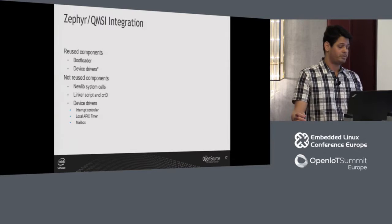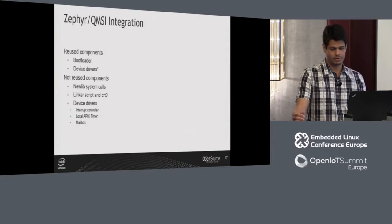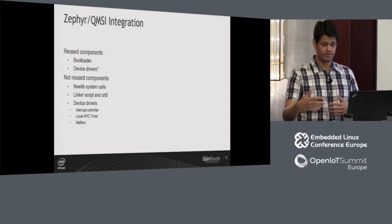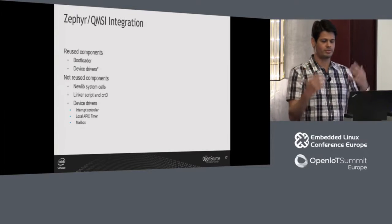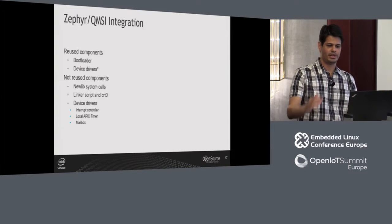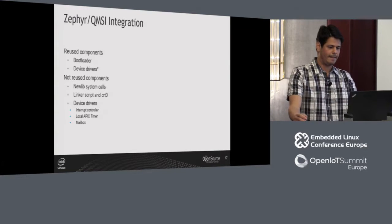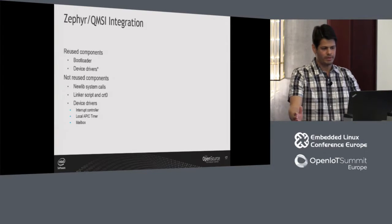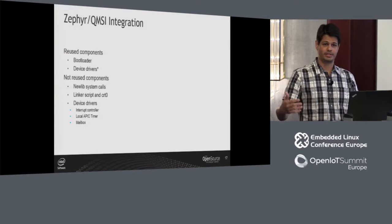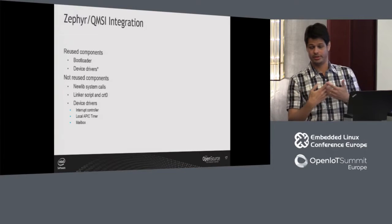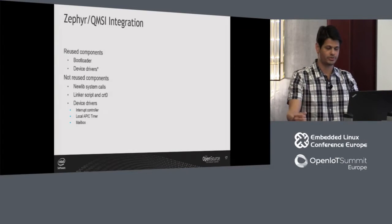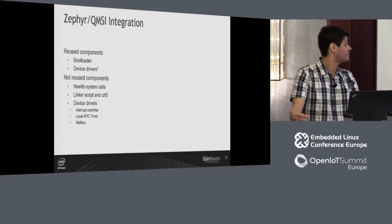Regarding the linker script and CRT0, we don't use them either because the Zephyr linker script is very customizable — depending on the kernel configuration, parts of the linker script change. The linker script from QMSI is a single static linker script. And the CRT0 doesn't make sense to reuse because it's very tightly coupled with the QMSI linker script.